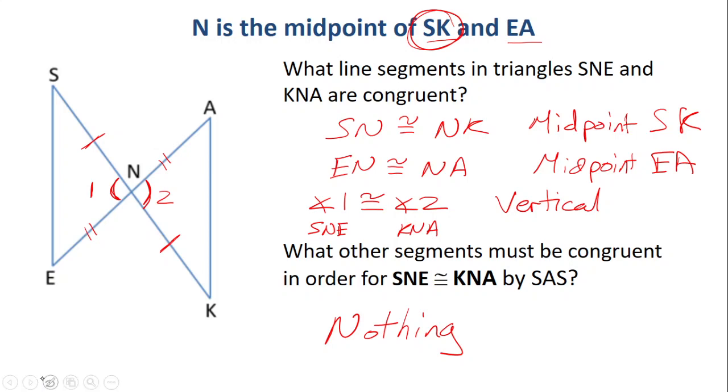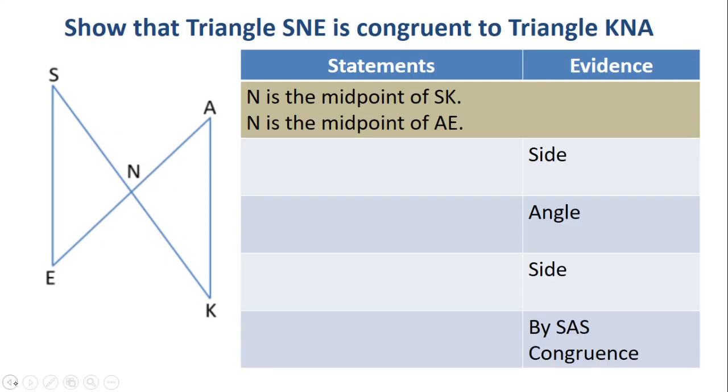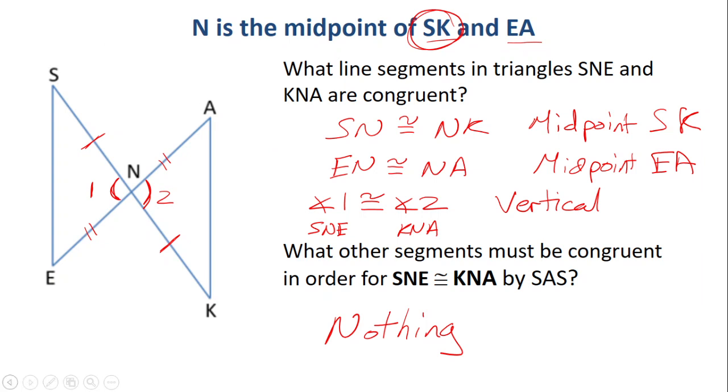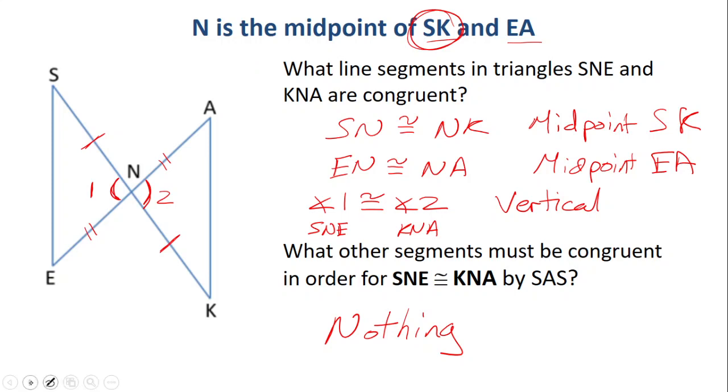Same thing is happening with the bisecting statement. Oh, I don't have the picture. If I said SK and EA bisect each other, then it would produce the same setup. So midpoint or bisector, we get the same thing. All right, try this proof on your own and see how you do.